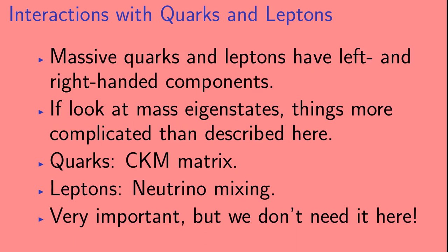Now, massive quarks and leptons have left and right-handed components. If you look at the mass eigenstates, things will get more complicated than what I've described here. In the case of the quarks, you need to look at the CKM matrix, and in the case of the leptons, you get neutrino mixing. Now, these issues are very important, but we don't need to talk about them here.